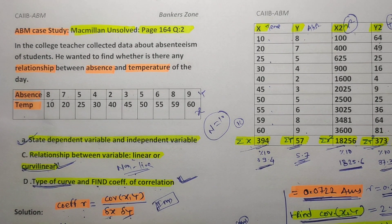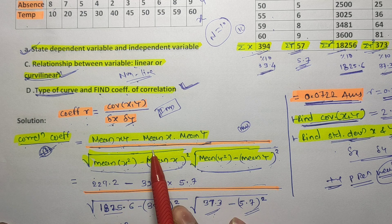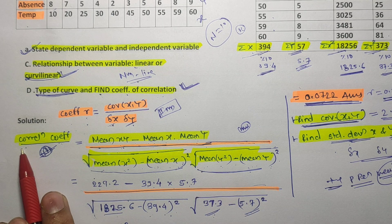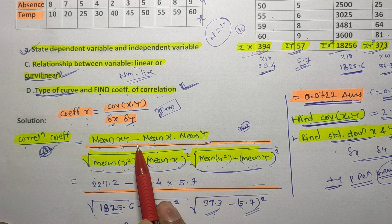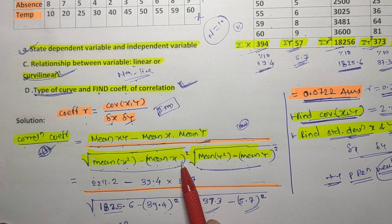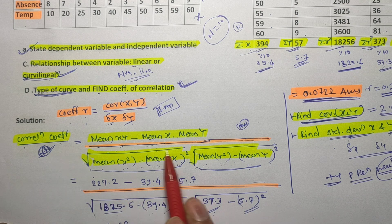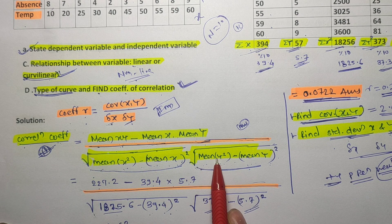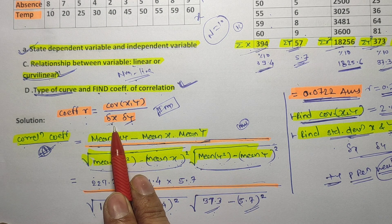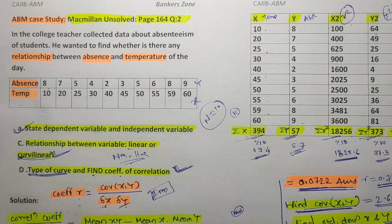To summarize, the key formula to memorize is: r = [mean(XY) − mean(X)·mean(Y)] divided by square root of [mean(X²) − (mean X)²] into square root of [mean(Y²) − (mean Y)²]. Write it five times and you will remember it easily. The numerator is the covariance and the denominator is σX·σY. This completes the correlation case study.